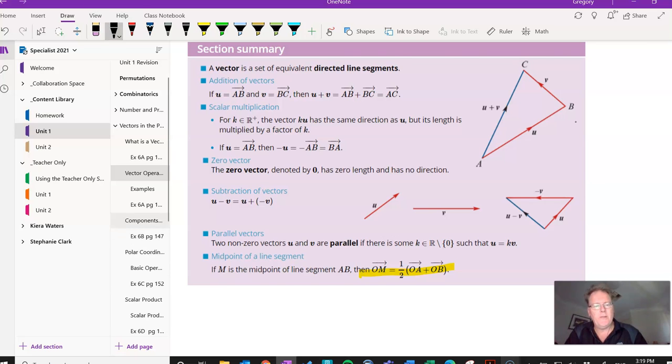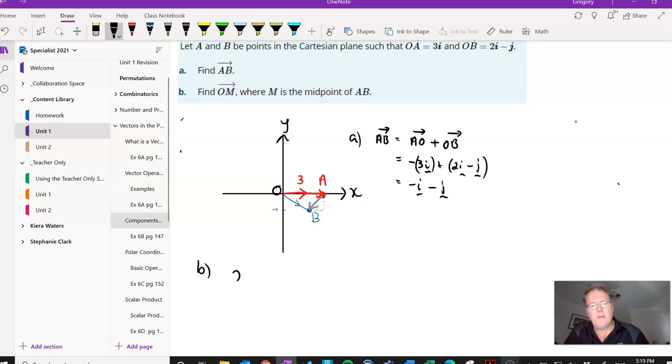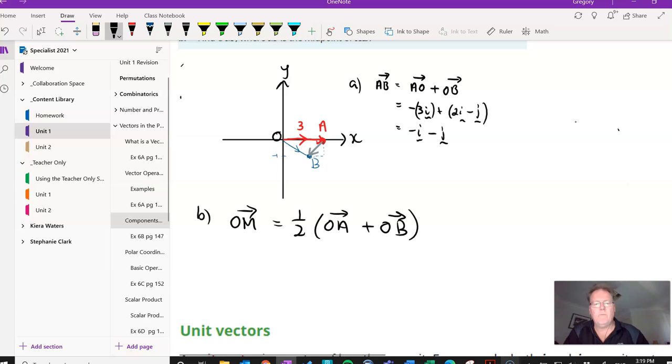So if we go back to the question we are doing, the midpoint OM is half of OA plus OB. Now, these are in both the original direction. So it's going to be a half of OA, which is 3I, plus OB, which is 2I minus J.